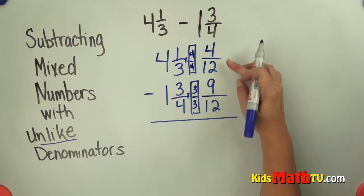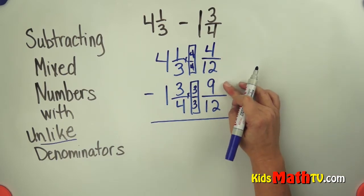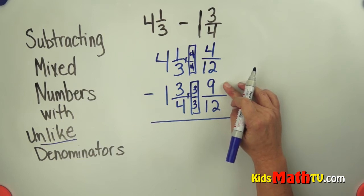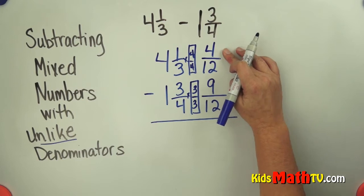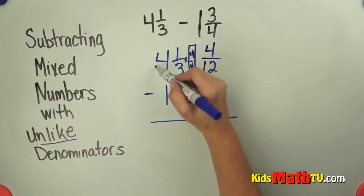Now I have 4 and 4 twelfths subtract 9 twelfths. Well I can't just do that easily so 4 subtract 9 doesn't work. I need to borrow.